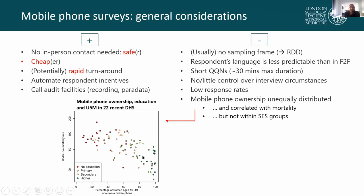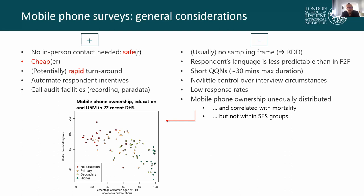As an example, one graph shows the correlation between the percent of women in a number of DHS surveys that own a mobile phone and under-five mortality on the Y axis, and a clear negative correlation is visible. However, once we start disaggregating by socioeconomic status — in this illustration, by educational status — the correlation between mobile phone ownership and the outcome of interest quickly reduces, which suggests we can statistically account for that at the analysis stage. But it's certainly something that needs to be dealt with explicitly.